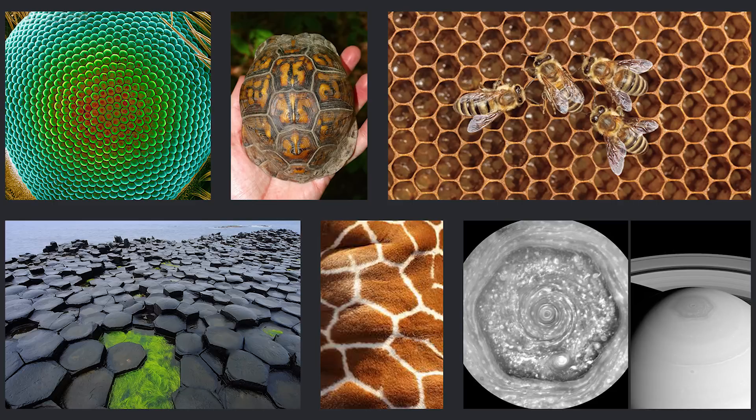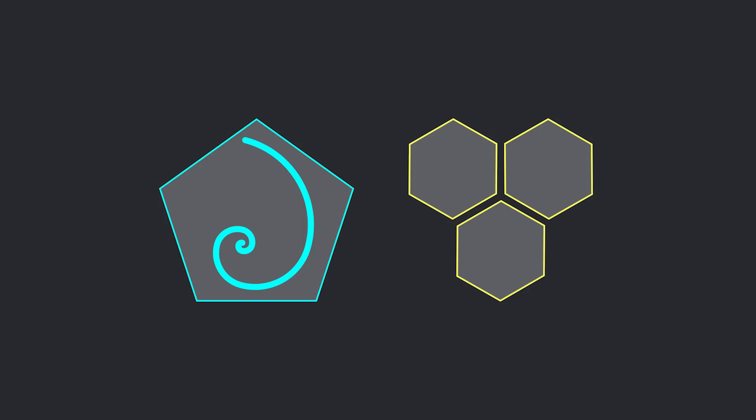The hexagon is found in nature in many places: the compound eye of an insect, a turtle shell, the honeycomb in a beehive, basalt rock formations, the pattern on a giraffe, the north pole of Saturn — which is a huge hexagonal cloud formation about an earth and a half wide. If the pentagon can be described as regenerative growth, what could we describe the hexagon as? I would say structure. When nature wants to grow something, it uses the pentagon. When nature wants to build something, it uses the hexagon.